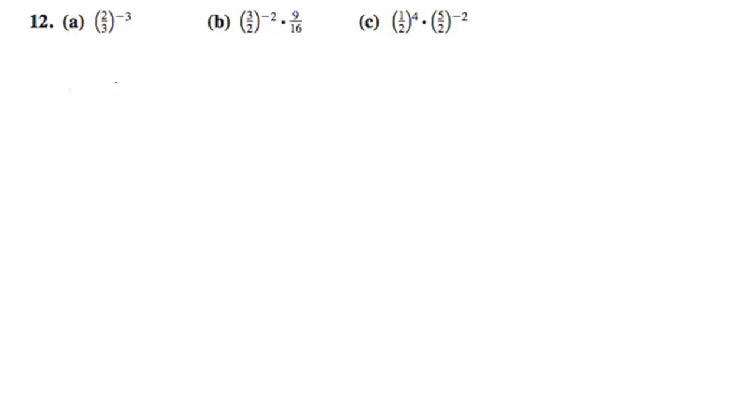We have 2 over 3 raised to the negative third. This is the same thing as 3 raised to the 3 over 2 raised to the third, getting positive exponents here, which equals 27 over 8.